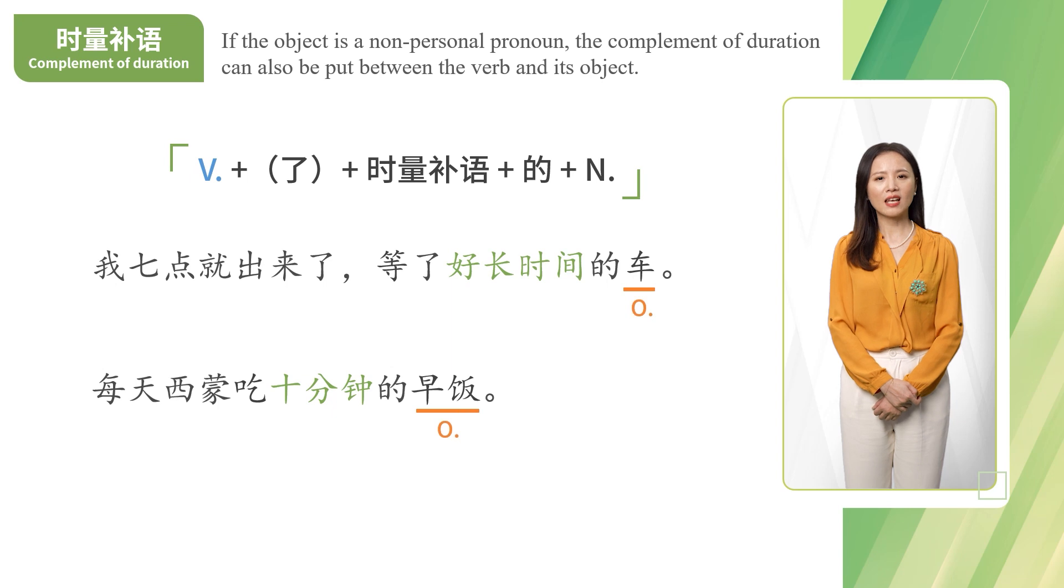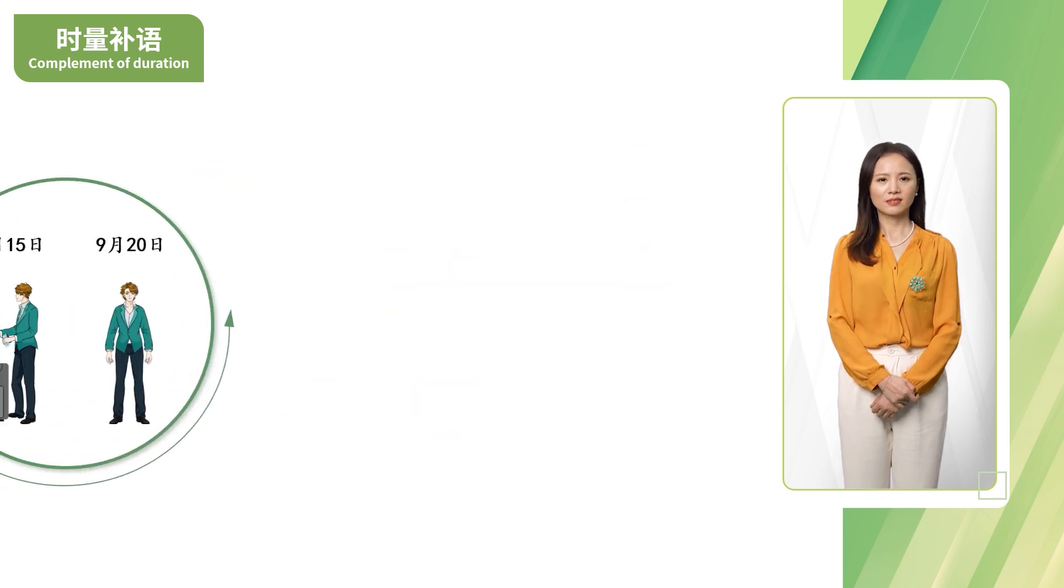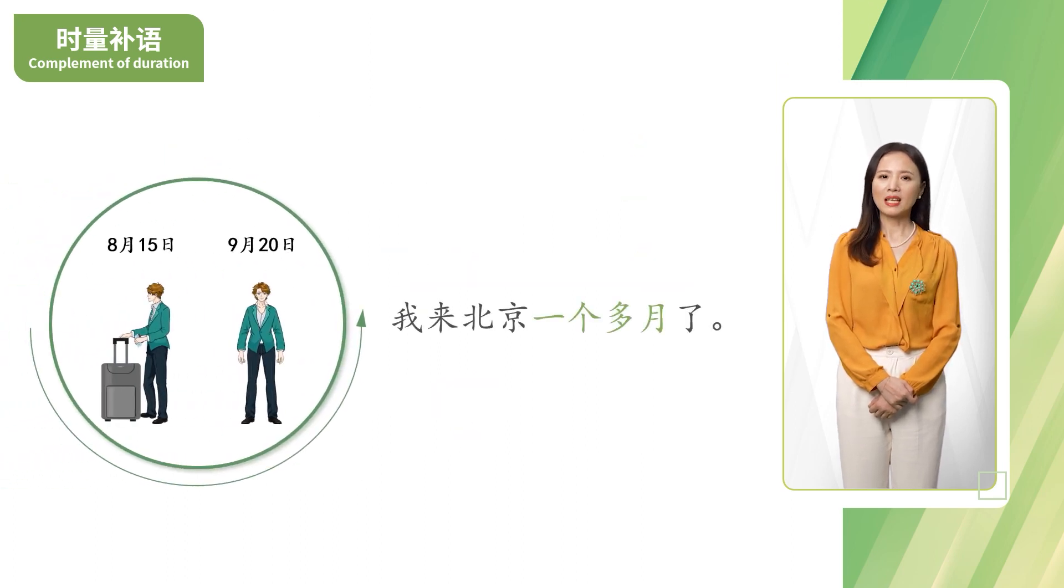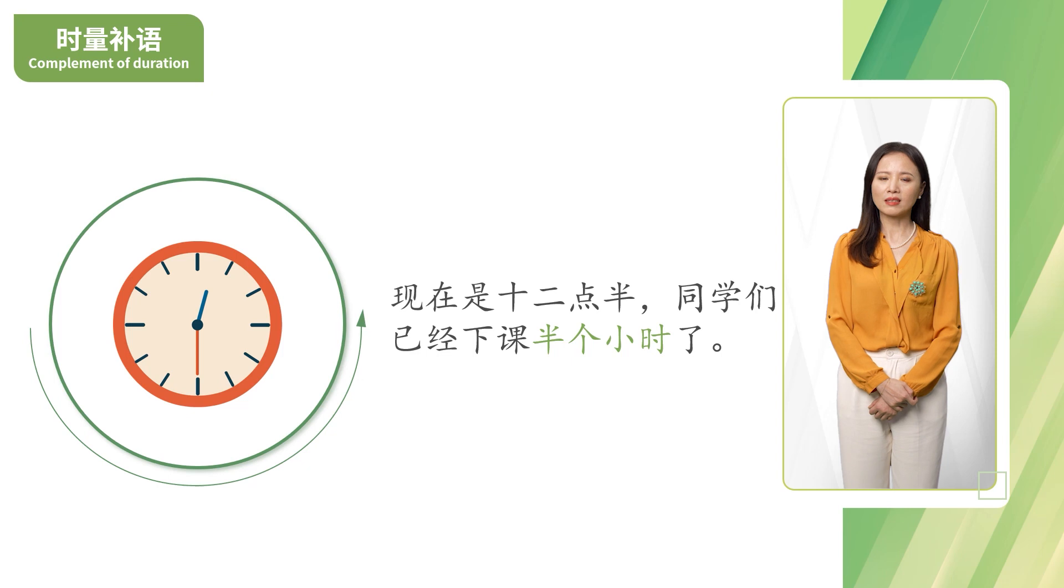If the object is a non-personal pronoun, the complement of duration can also be put between the verb and its object. 我来北京一个多月了。现在是十二点半。同学们已经下课半个小时了。